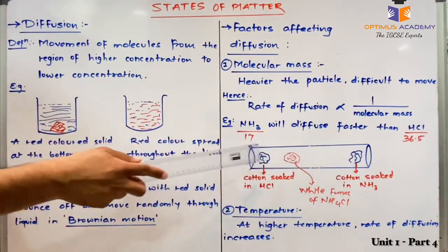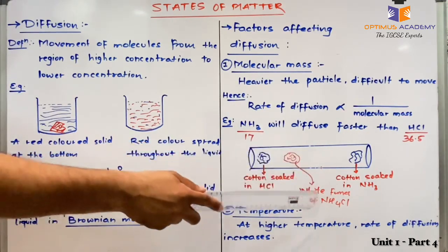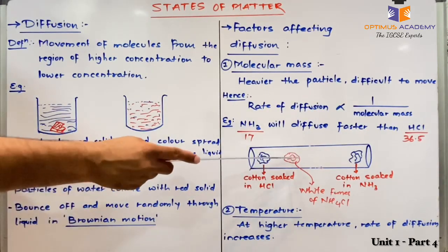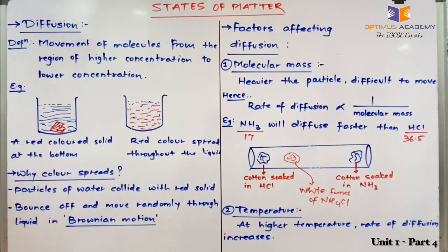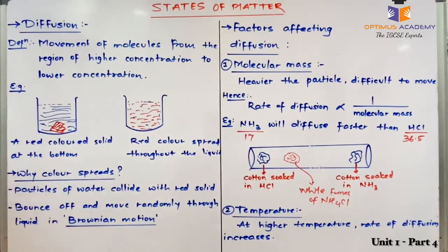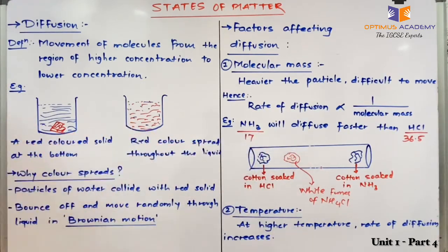If we consider the same test tube and heat it from the center, would the spot where we observe NH4Cl be at a different position? The answer is no — the spot would be at the same position, but it would be observed at a much earlier time. This is because the effect of temperature is similar for both HCl and NH3 when the tube is heated from outside. However, if HCl is heated separately before being placed in the tube, the spot would appear at a different position, as heated HCl would diffuse at a faster rate.